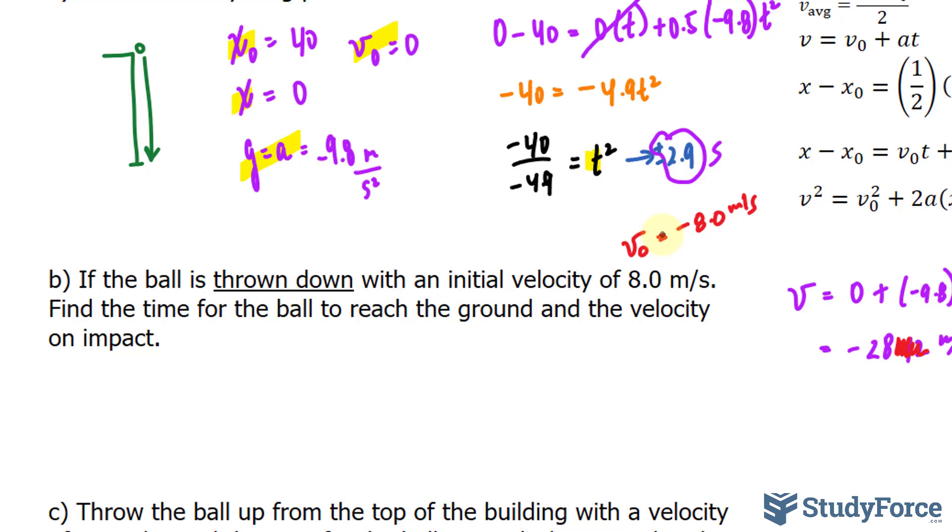Find the time for the ball to reach the ground. So this time they're looking for the time and the velocity on impact. So the final velocity. That should be a negative value.